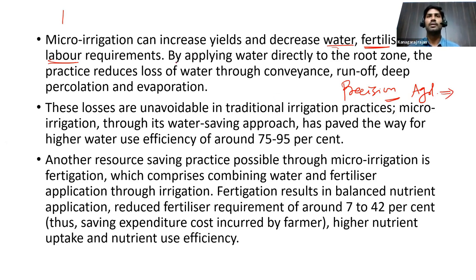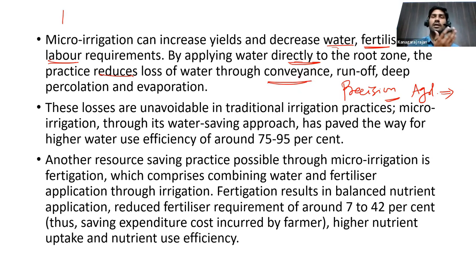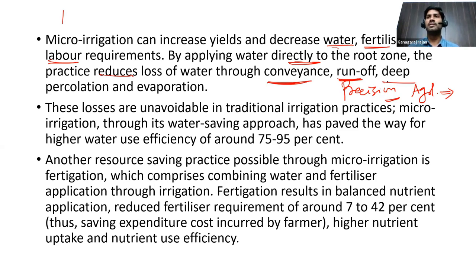In drip irrigation, water is applied directly to the root zone of the crop. This reduces conveyance loss — water is delivered through a network of pipelines and tubes — avoiding evaporation and percolation losses that occur when water is carried through open canals. Runoff loss and deep percolation are very common in the flooding method of irrigation. In traditional methods, we can achieve only 40 to 50 percent irrigation efficiency.